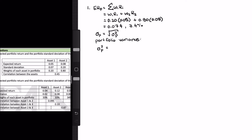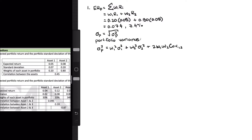The formula starts like this: weight of 1 squared times standard deviation of 1 squared, plus weight of 2 squared times standard deviation 2 squared, plus 2 times weight 1 times weight 2 times the covariance of assets 1 and 2. You'll see this pattern over and over again. I would encourage you to write the formula down repeatedly so you can memorize it. The table gives us all the information we need except the covariance.